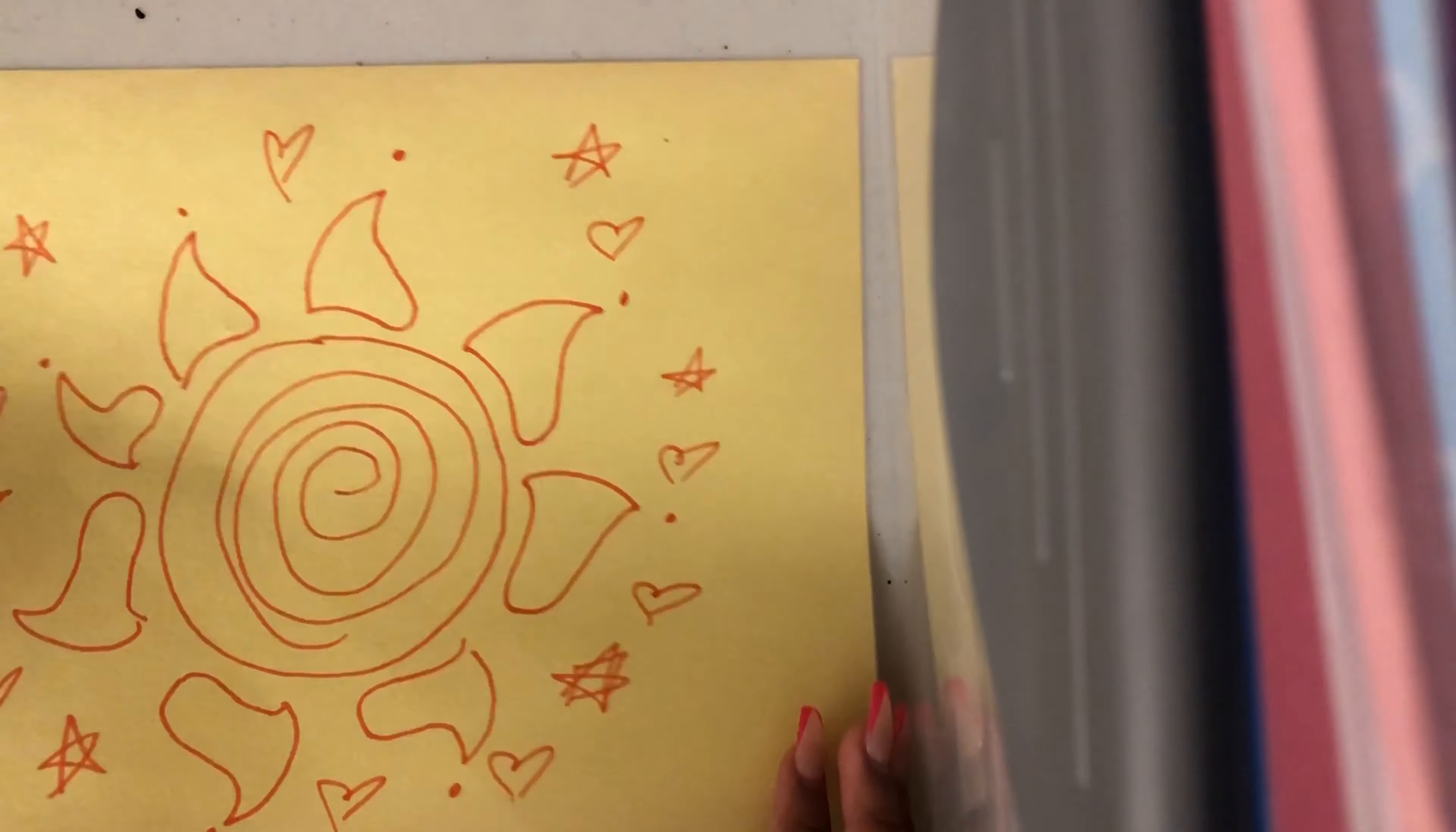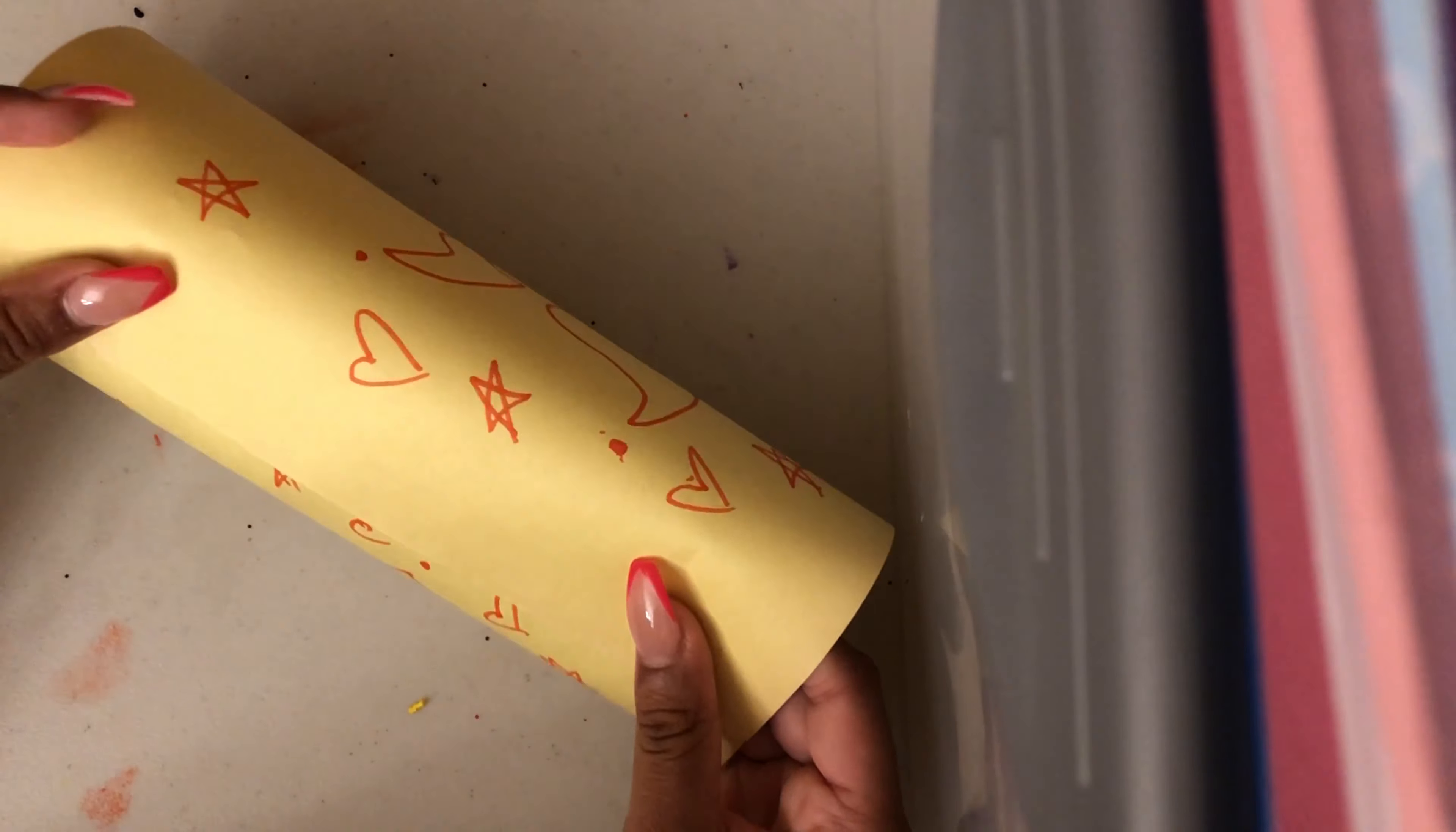Once you finish your design, you're going to take your paper and roll it into a cylinder. As you can see, I'm mapping out how tight I want to make the cylinder and that's where I'm going to glue it.